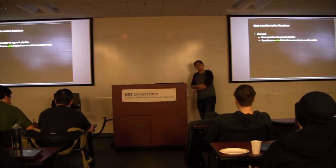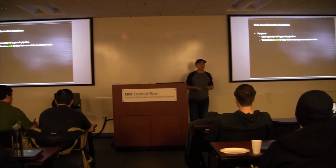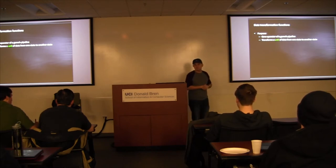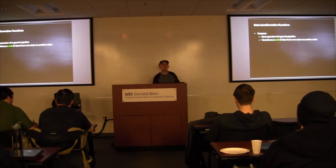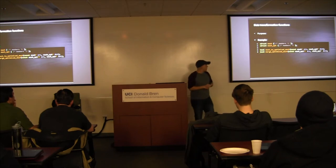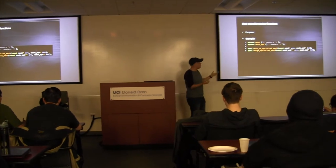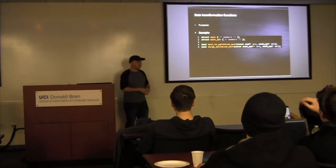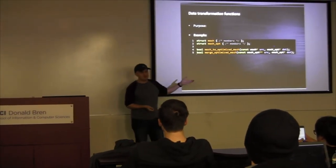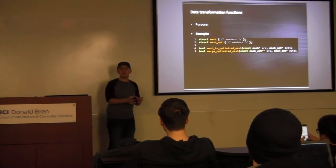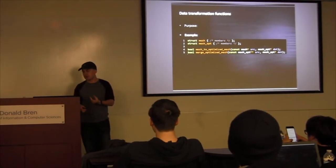The most important thing is something I call the data transformation function — it's the core operator of your game's pipeline, kind of like addition or multiplication. Its purpose is to transform some unit of data from one state to another. That might be something as high-level as taking a full set of data and creating a game, or something as simple as a function that takes a mesh and creates an optimized mesh. Another transformation function might take a set of optimized meshes and merge them into one. That's the granularity — something that transforms your data in a single unit.